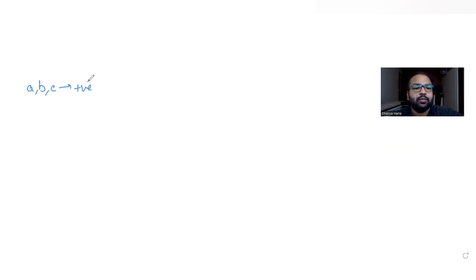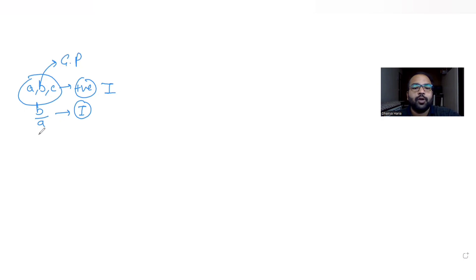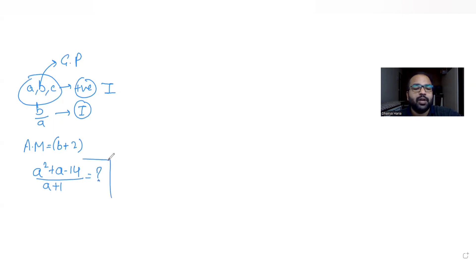Today's question is based on the idea of geometric progression. The question states that a, b, and c are positive integers such that b upon a is also an integer. If a, b, c are in geometric progression, and the arithmetic mean of a, b, c is b plus 2, we need to find the value of the expression (a² + a − 14) / (a + 1).